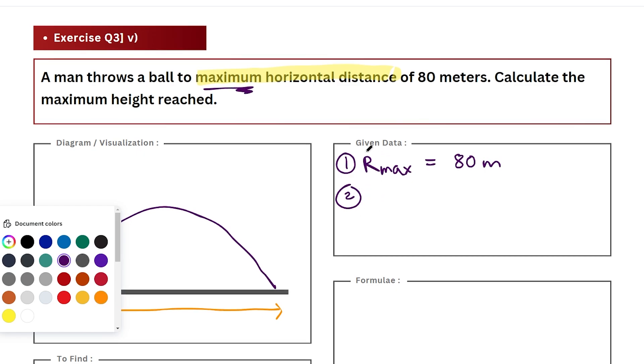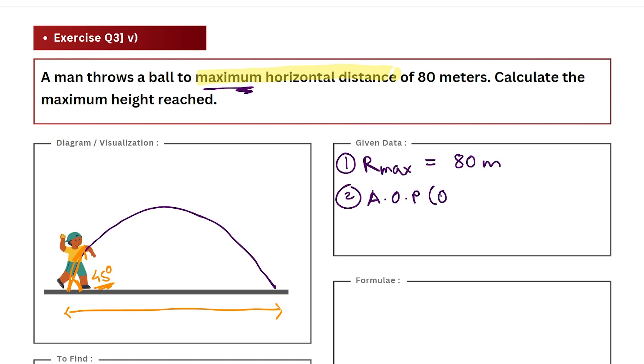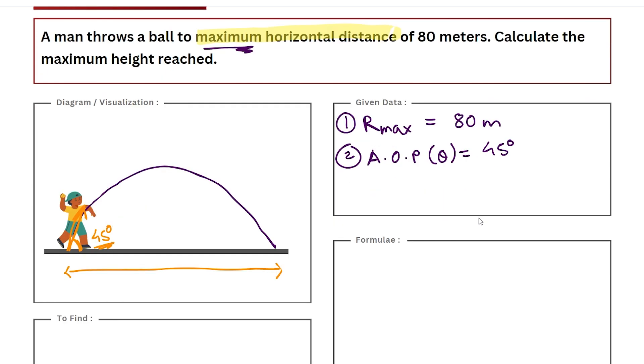So if this distance is maximum, I can say that my angle of projection, which I represent generally using theta, has to be 45 degrees. Okay, so these are the two given quantities - one which we have directly given to us and the second which we have to derive with a little logic.